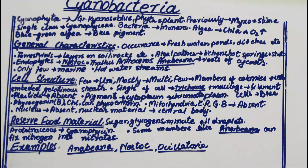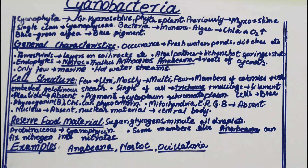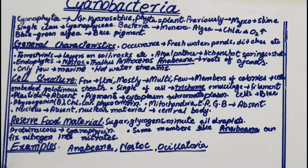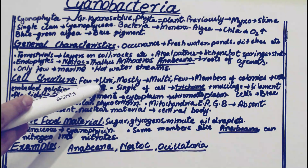Cyanobacteria can also live in hot water streams and springs — they have no problem with high temperatures. Now the important point is cell structure: what is the cell structure of cyanobacteria, whether they have membrane-bound organelles or cell walls, and so on.